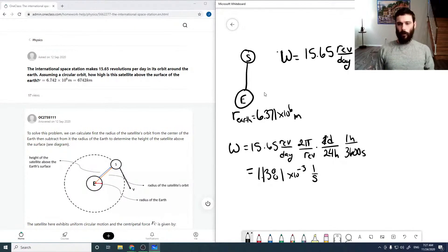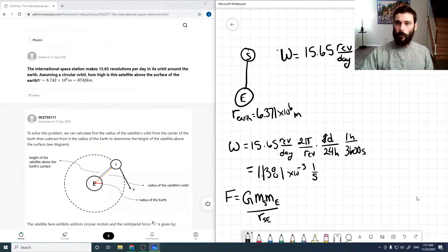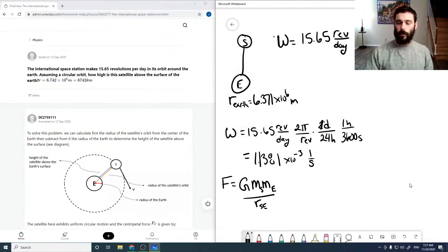So our satellite and our Earth interact through our gravitational force. So G, M_S, M_E over R_SE. And because they're in circular orbit, that must equal our centripetal force, which is M_V squared over R_SE. And that should be squared.